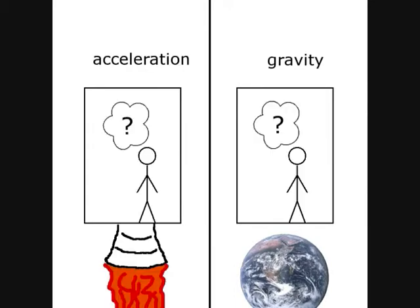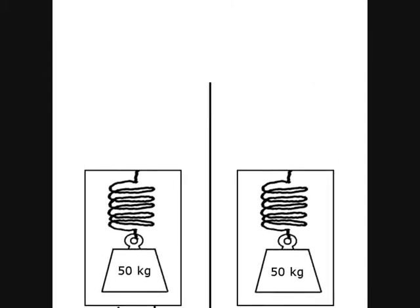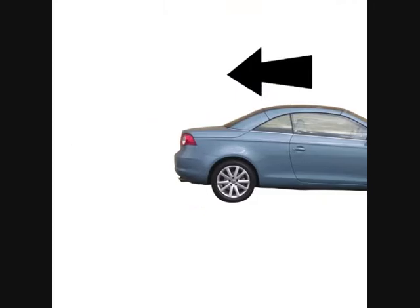For example, 50 kilograms hung from the ceiling by a spring will stretch out that spring the same length under acceleration as it will under gravity. This is why you feel pressed back into the seat of your car when you accelerate.